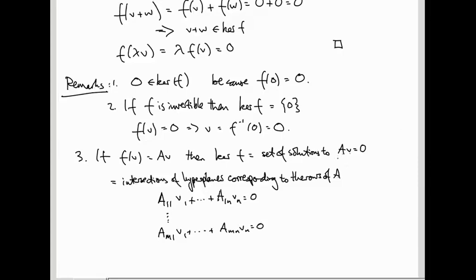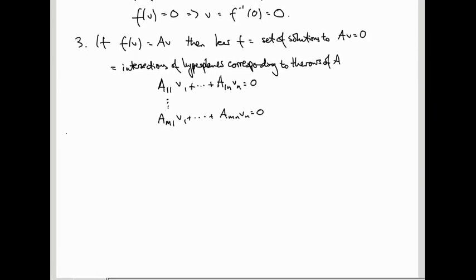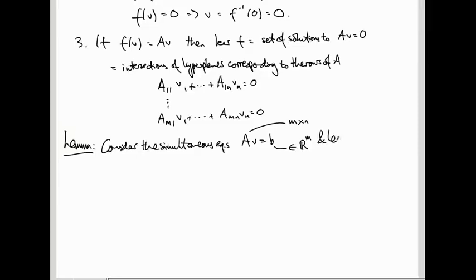Now, when we talked about systems of simultaneous equations, remember we had AV equals B as the general equation. So I just want to prove a lemma. We've actually already seen this. I just want to reiterate it, because it's in this new language. So consider the simultaneous equations AV equals B, where A is an M by N matrix, and B is a vector in R^M. And let F of V be the linear map AV.